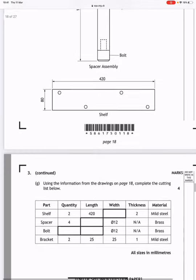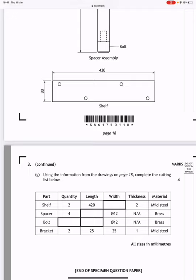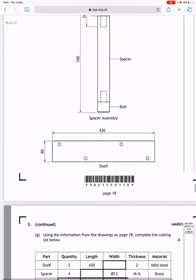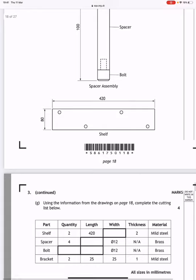Drawings of the shelving unit are shown below. Using the information from the drawings on page 18 complete the cutting list. We've got the shelf, and we need two shelves. The length is 420mm, the width is 80mm, and it's 2mm thick. It's made from mild steel.